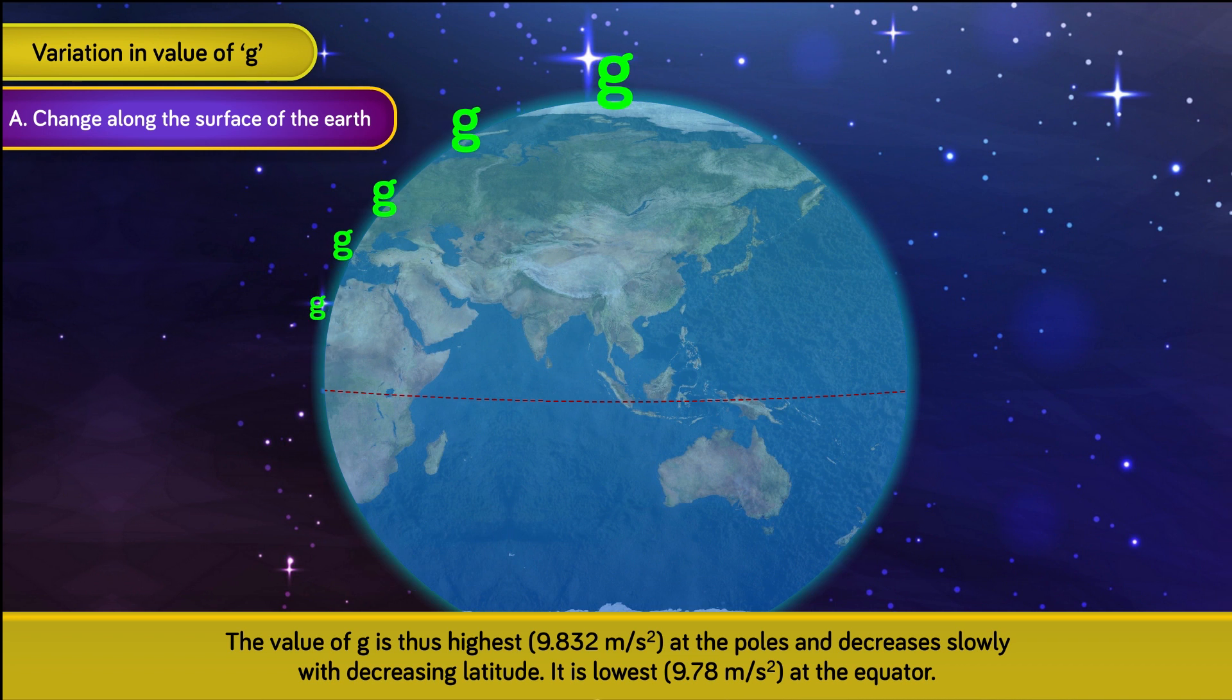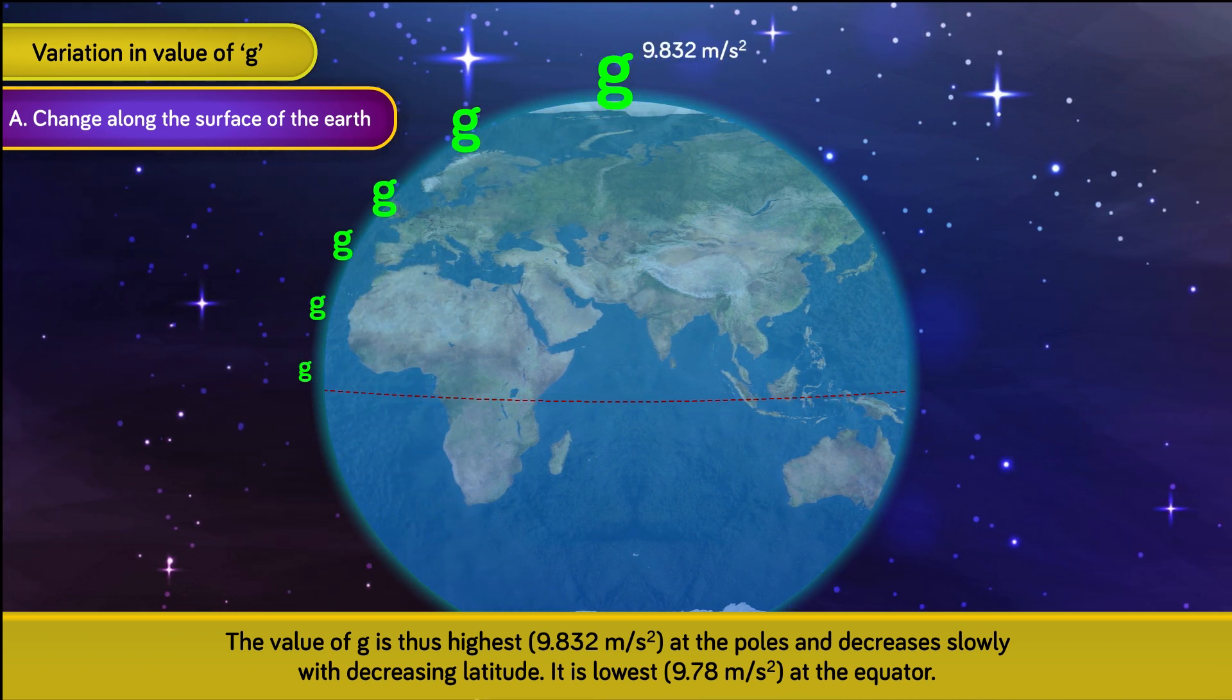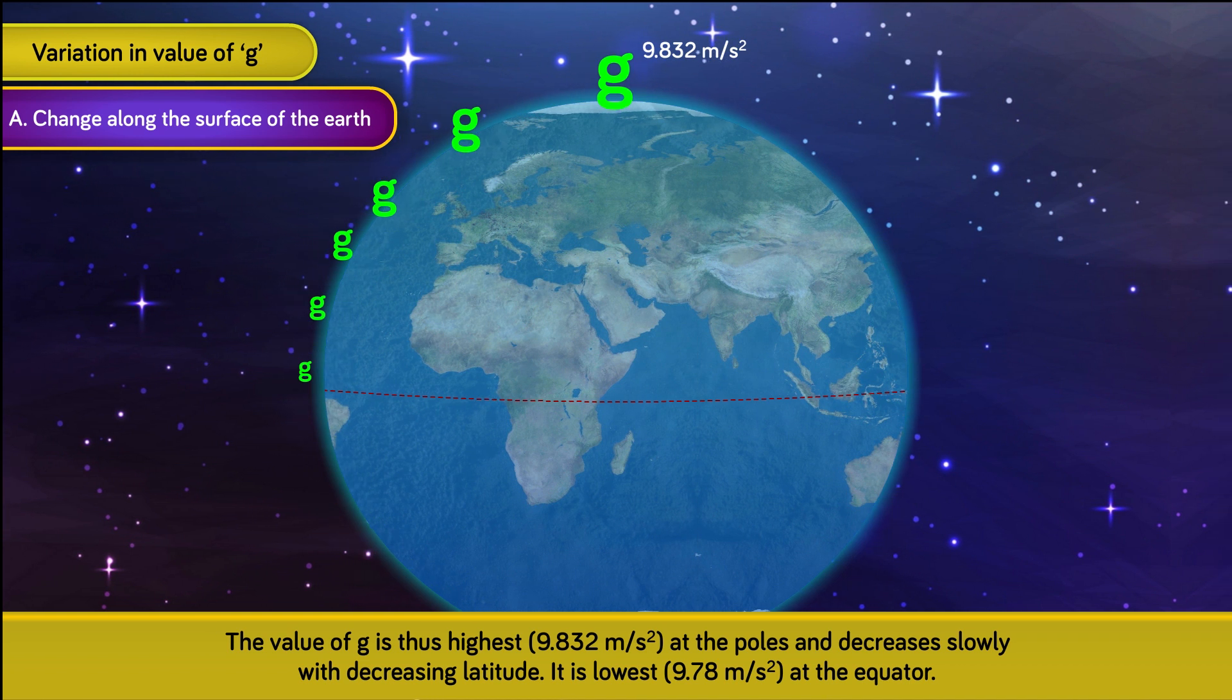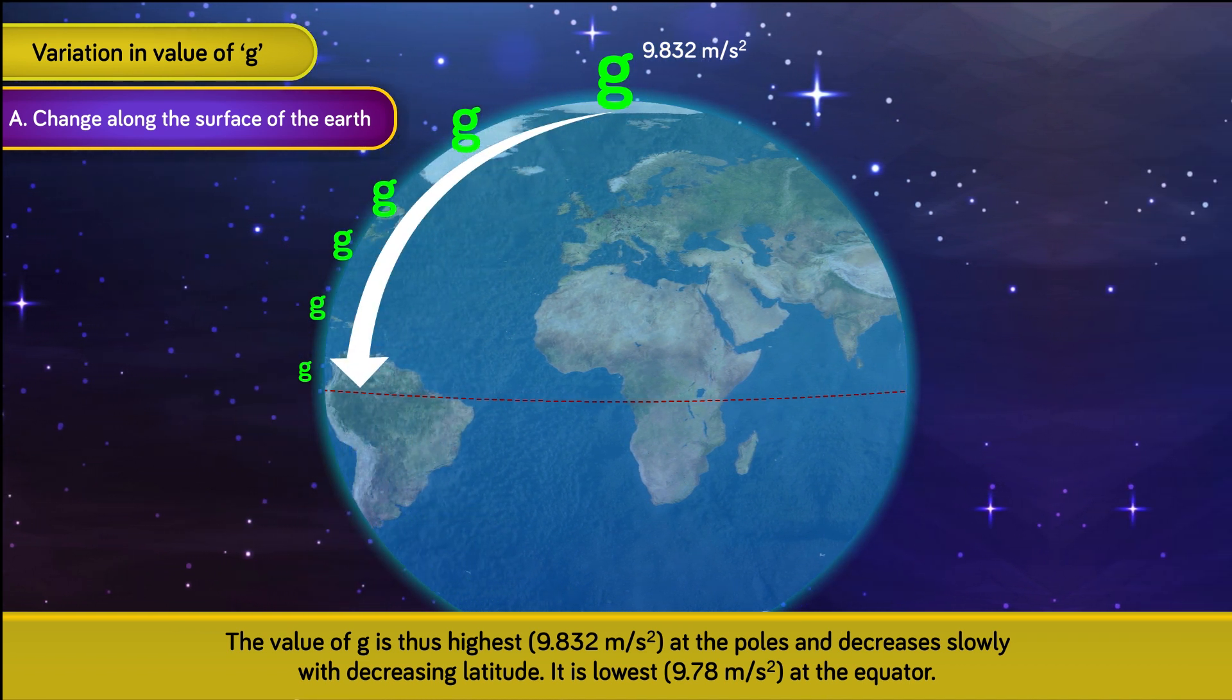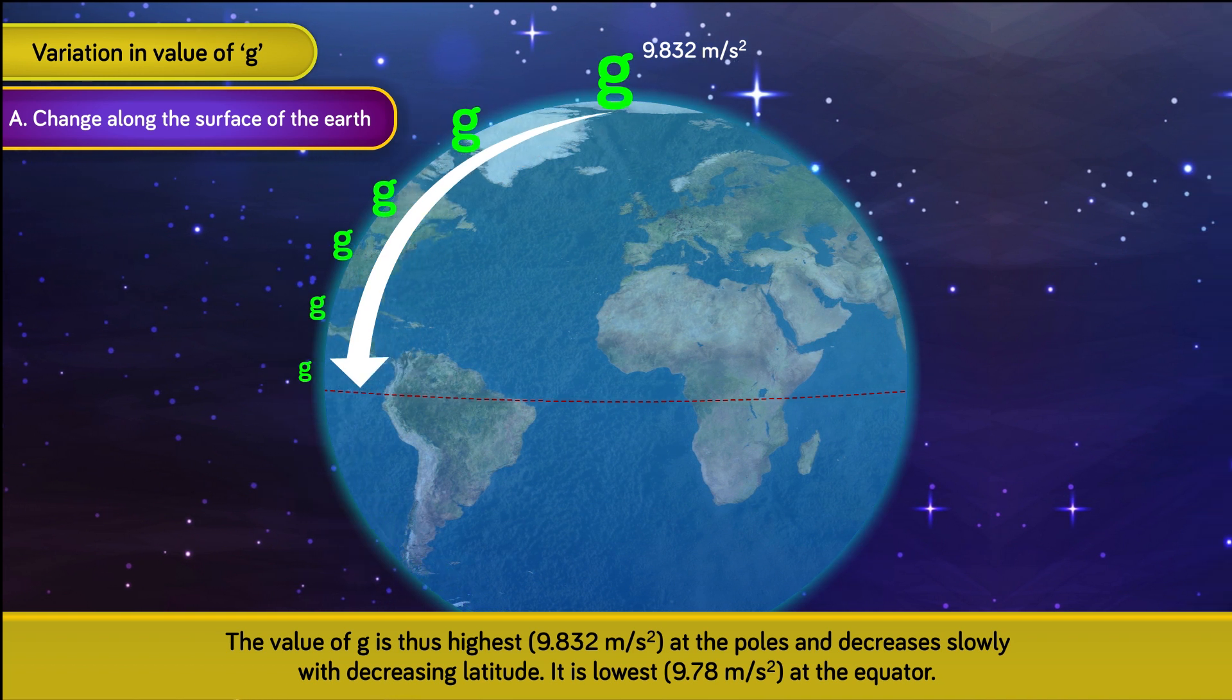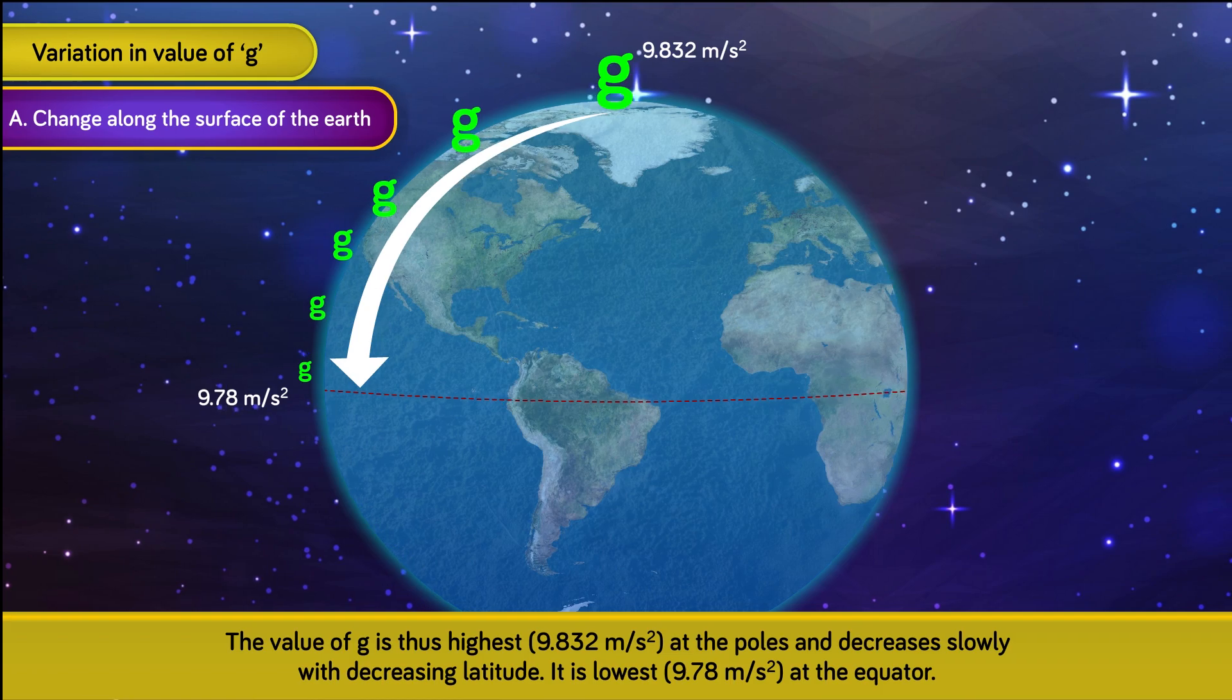The value of g is thus highest, i.e., 9.832 m per second square at the poles and decreases slowly with decreasing latitude. It is lowest, i.e., 9.78 m per second square at the equator.